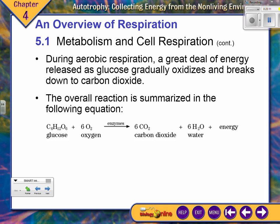Photosynthesis has two processes: light reactions and the Calvin cycle. Cellular respiration has three stages: glycolysis, the Krebs cycle, and the electron transport chain. Knowing these numbers helps you make sure you've covered everything when writing your essay.